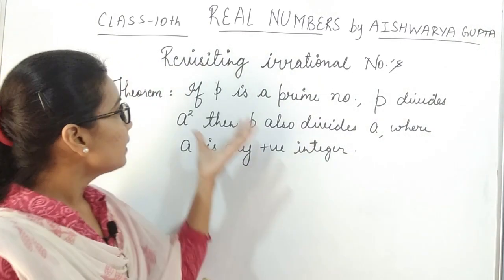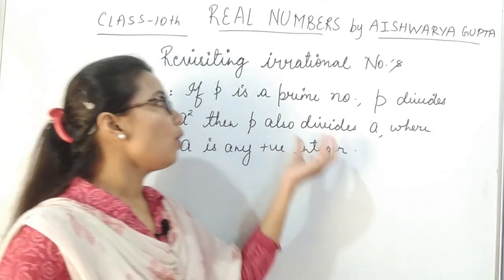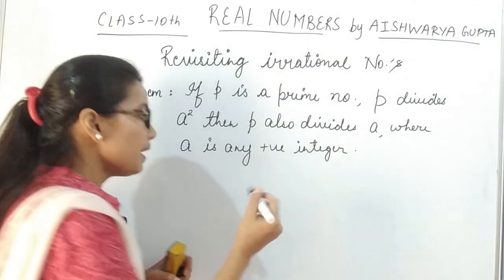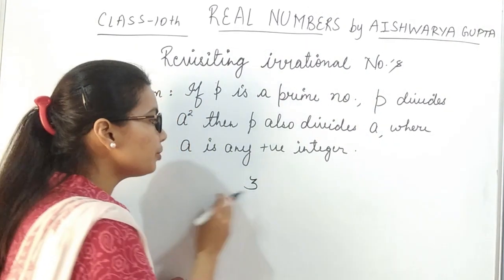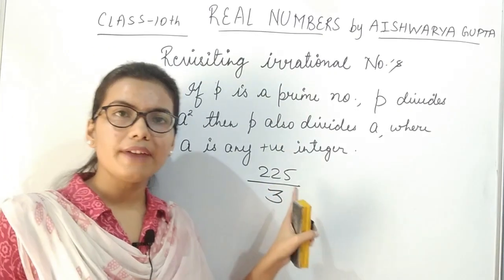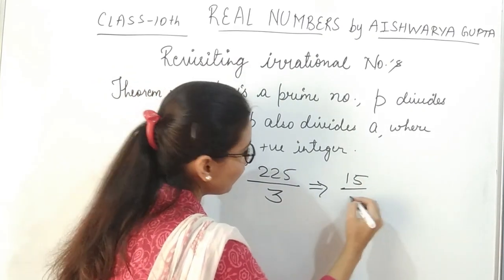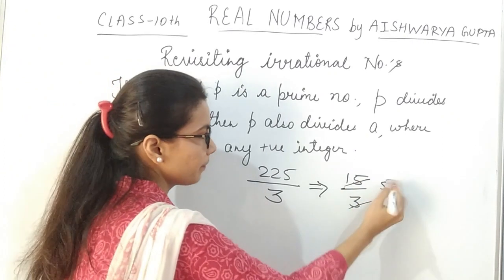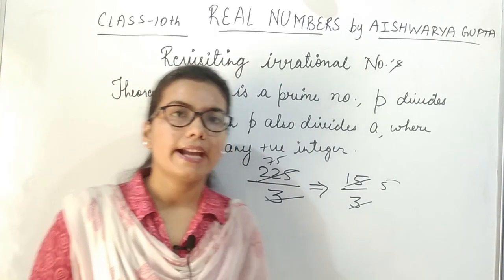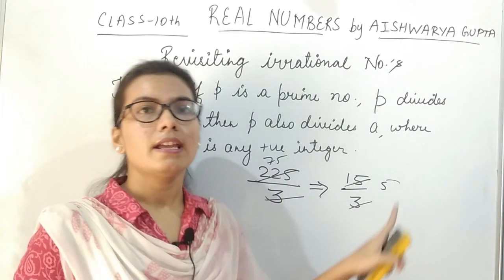For example, if we talk about 3: if 3 divides A squared, then 3 also divides A, where A is any positive integer. For example, if 3 divides 15 squared — which is 225 — then 3 will also divide 15, as we can see. This theorem states that if any prime number divides the square of any positive integer, then that prime number also divides that integer.